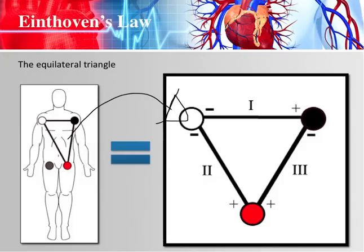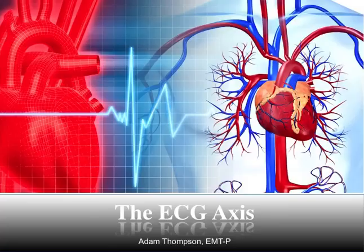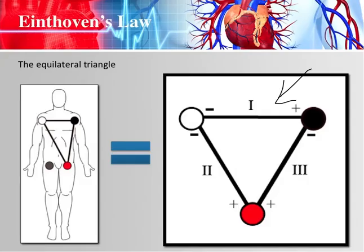So this becomes this electrically — this is how you need to picture the leads looking at the heart, and it gives you a better idea of where our angles come from as we get into the hexaxial reference diagram. That's pretty much it for this lesson one. Go back through it if you don't understand completely — Eindhoven's triangle and how Eindhoven discovered this triangle is super important. The limb leads and how we use them is going to come up real soon in the next part of the axis determination tutorial.